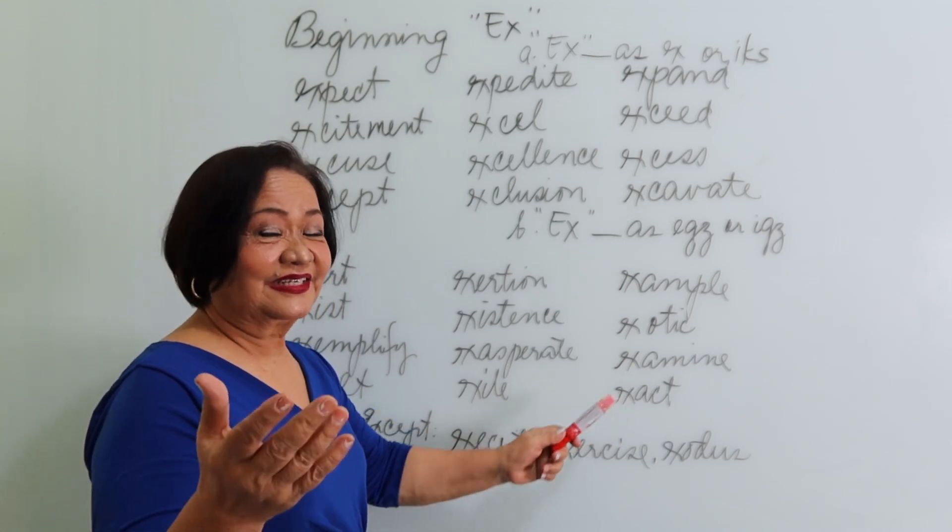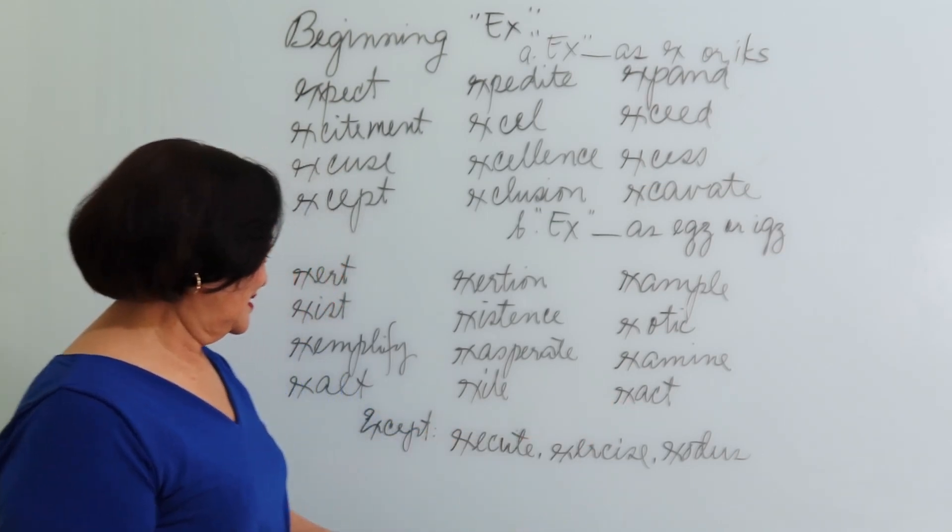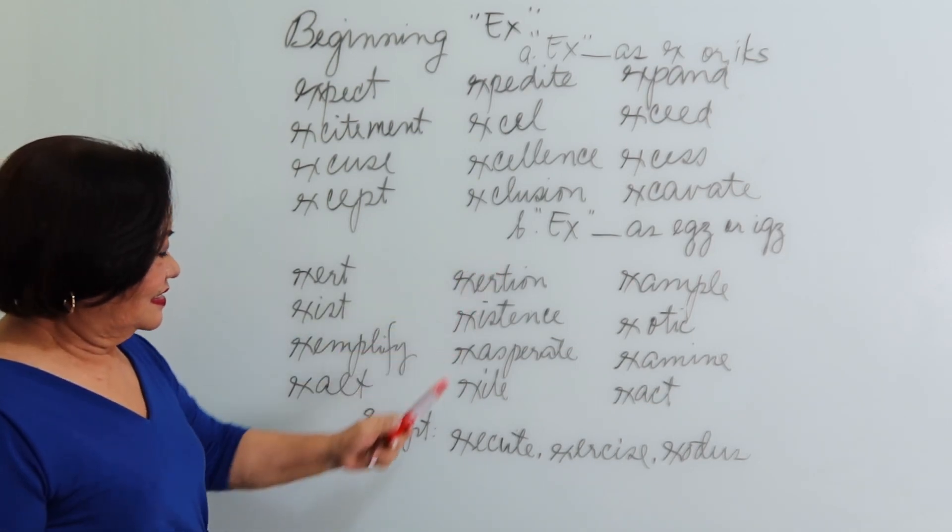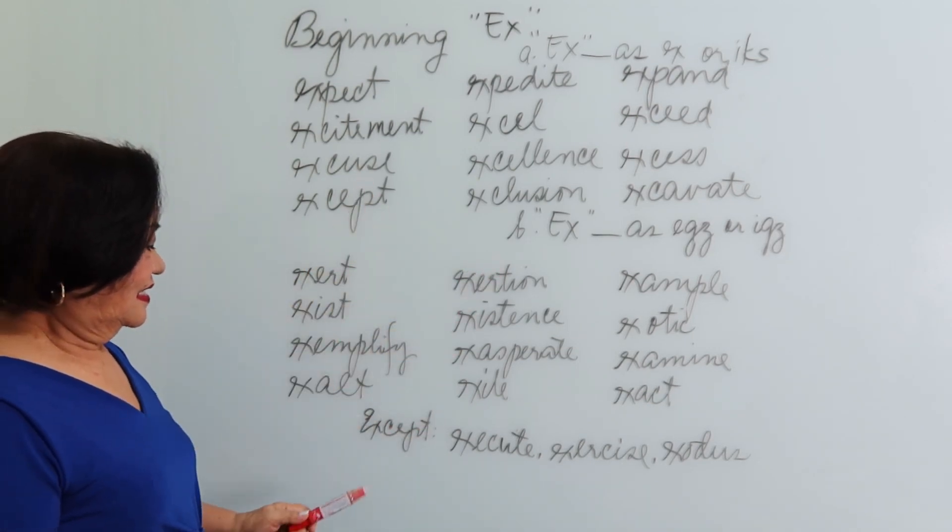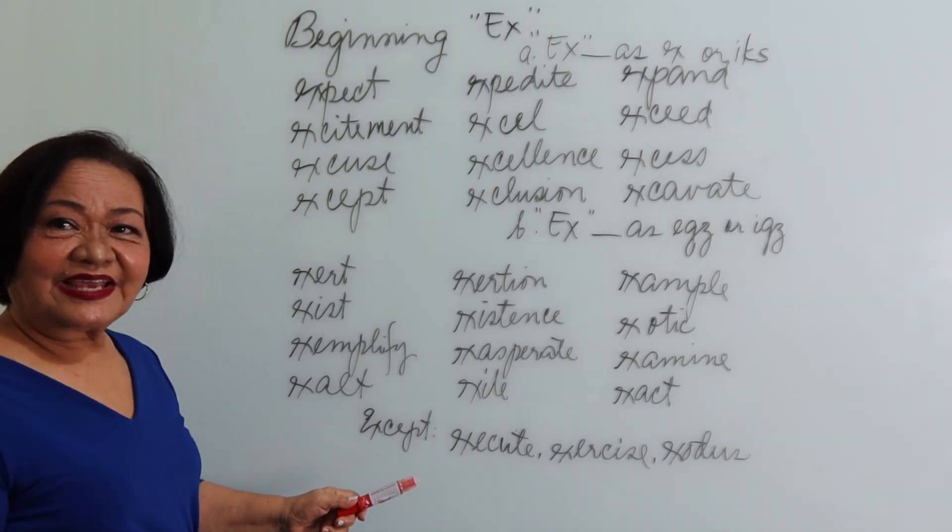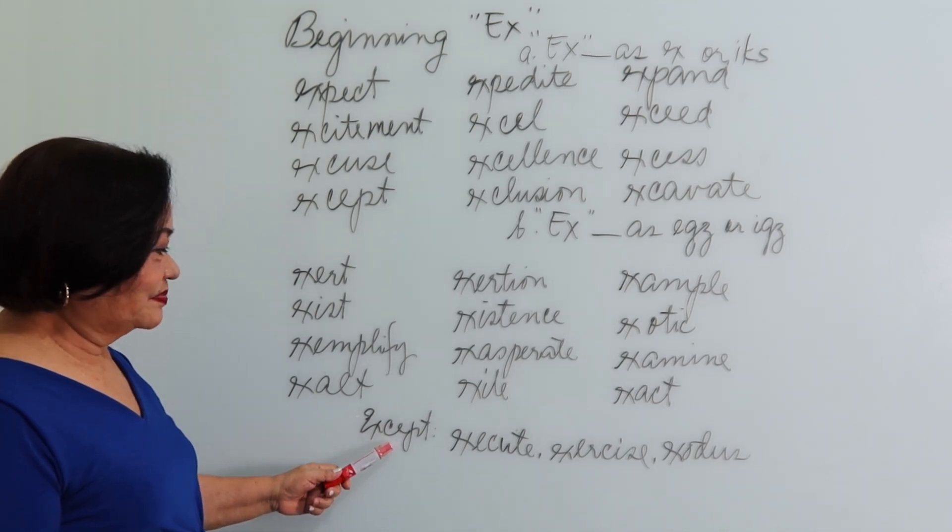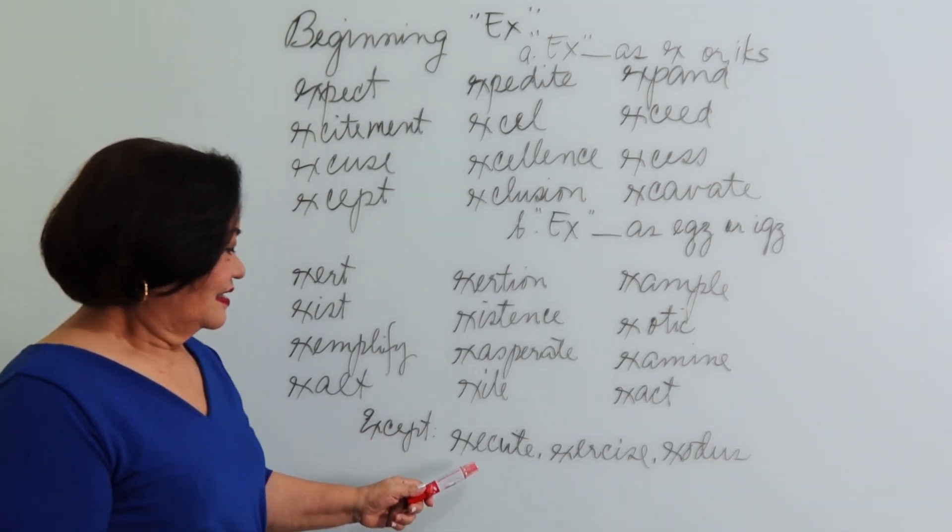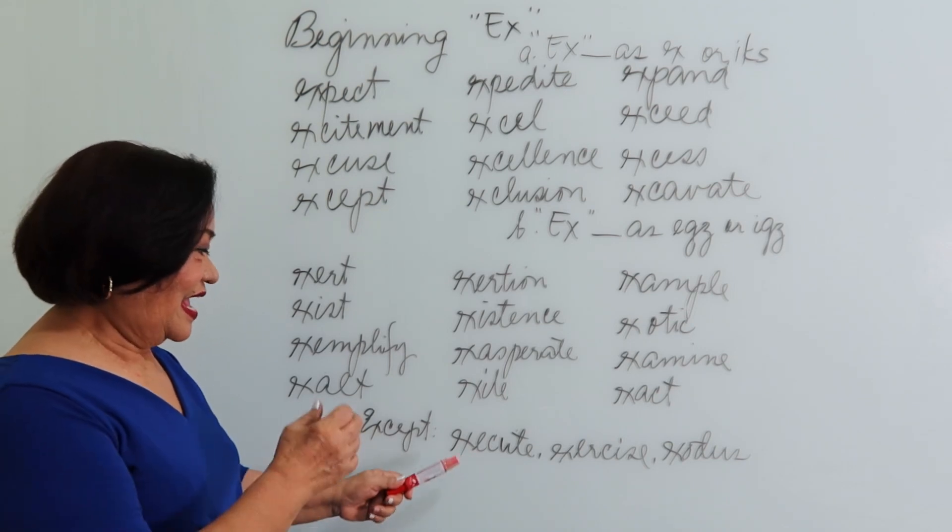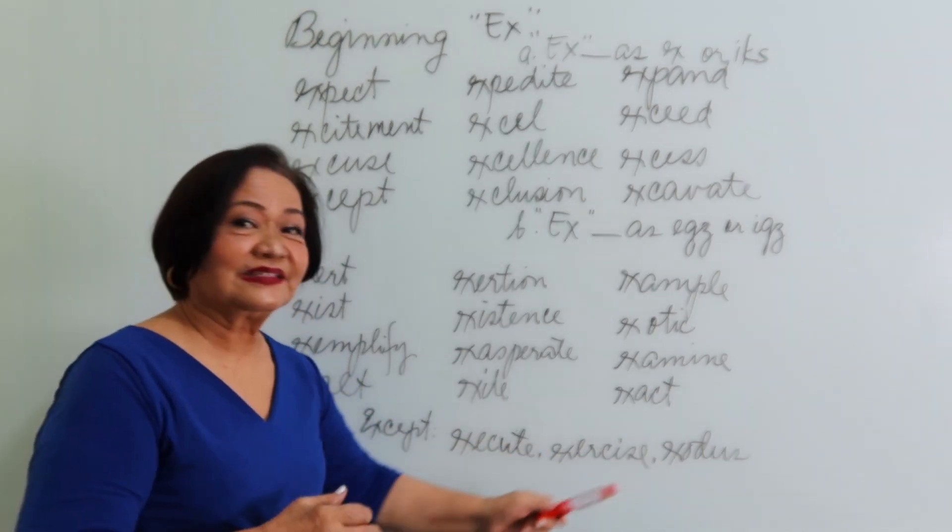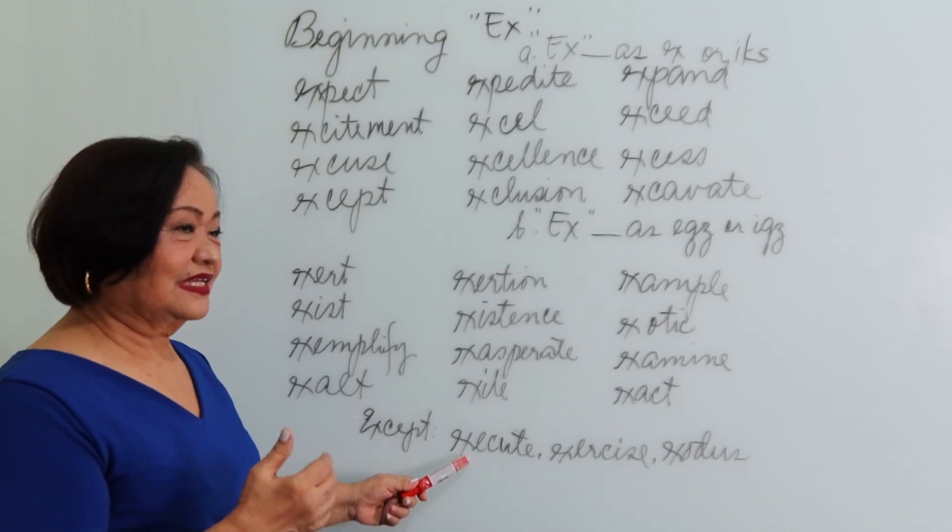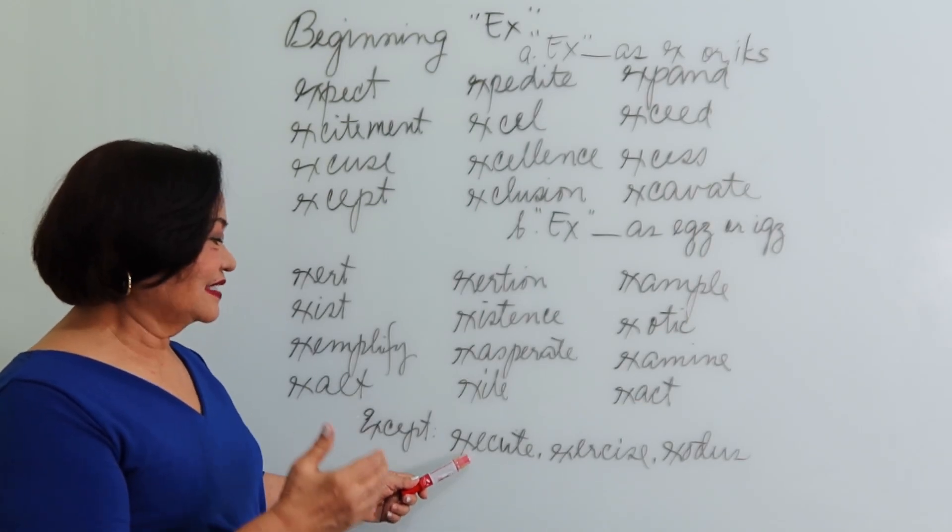That's exactly what we want. However, for this particular X, we have exceptions. So, accept. Execute. This should have been egg, egg, egg. But this is an exception. So we have execute.